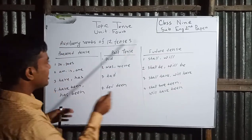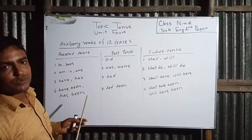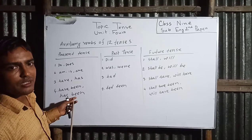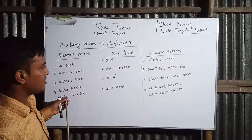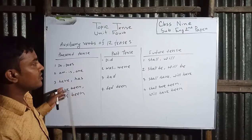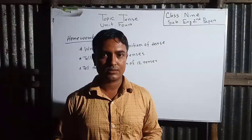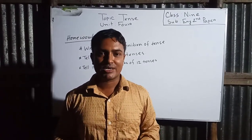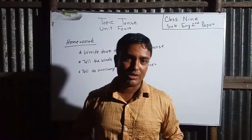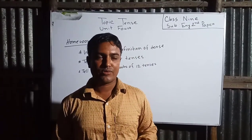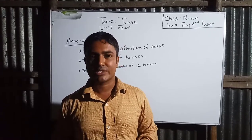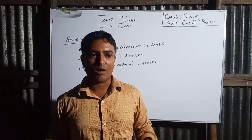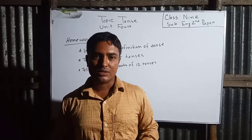Dear students, all these are the auxiliary verbs of the twelve kinds of tense. You must memorize them if you want to learn tense fluently. Today's topic was tense. We have come to know what tense is, the kinds of tense, and the auxiliary verbs of each tense.